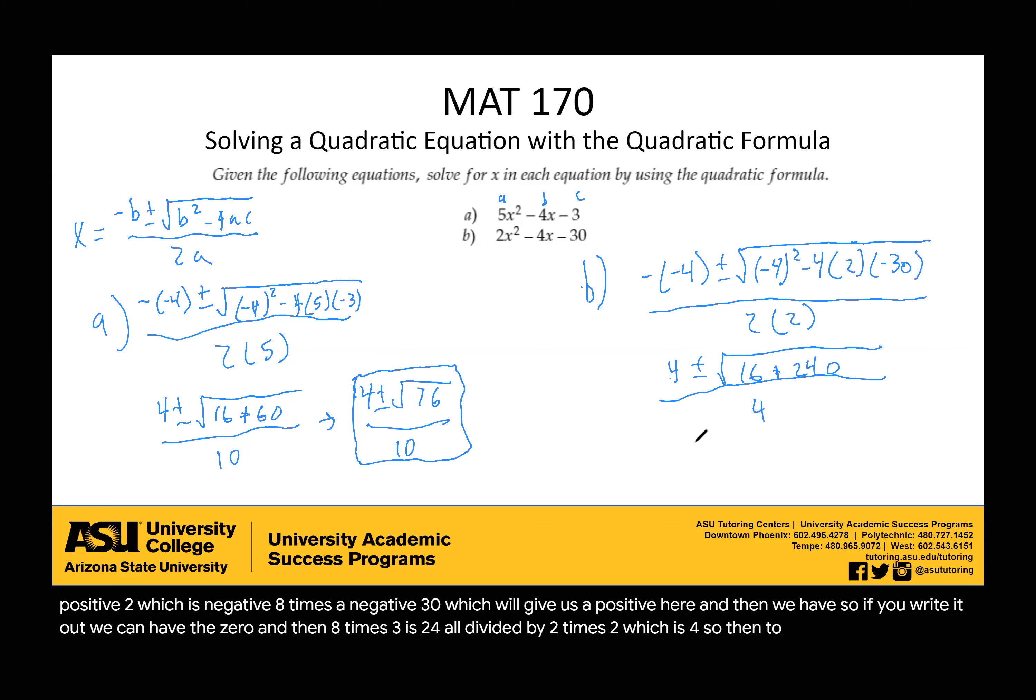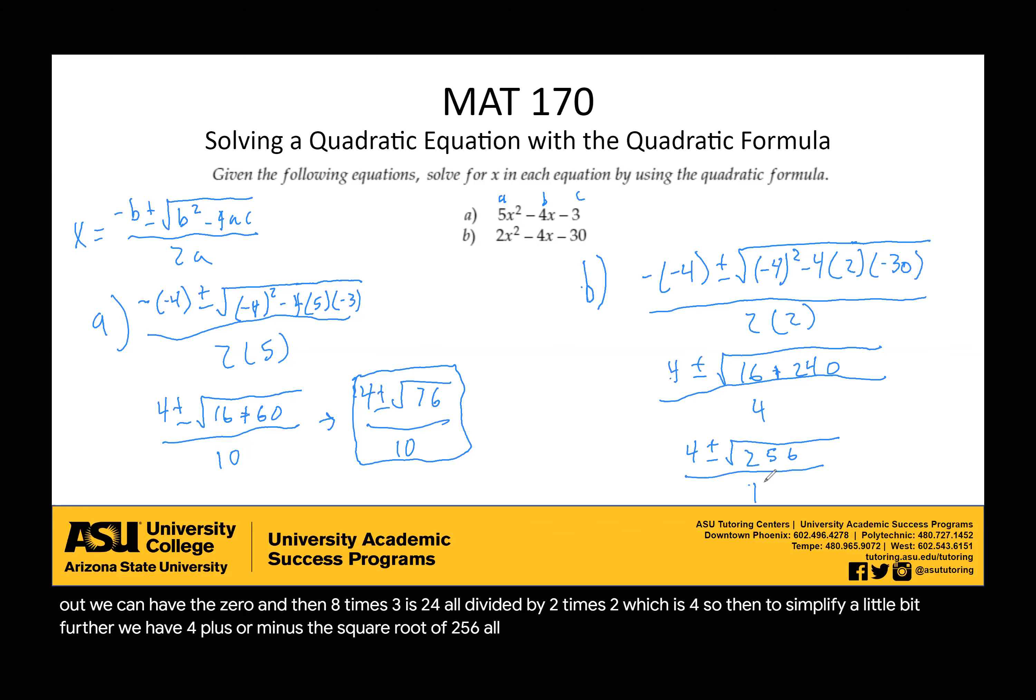So then to simplify a little bit further, we have 4 plus or minus the square root of 256, all divided by 4. And then from there, that will be our answer of what x equals.